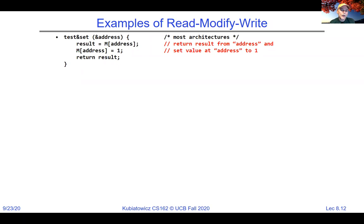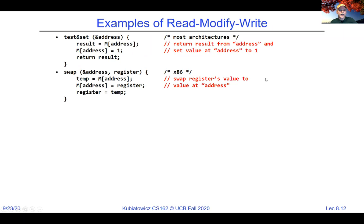There is also swap, which takes not just a memory address but a register value. The idea is to grab the value in the memory location and store the register value there — a generalized test-and-set. If there was a five in memory and you swap with a six, when you're done there's a six in the memory location and you get a five back.